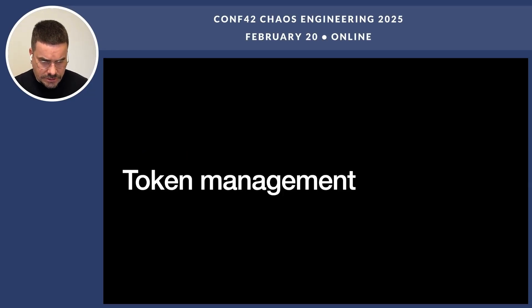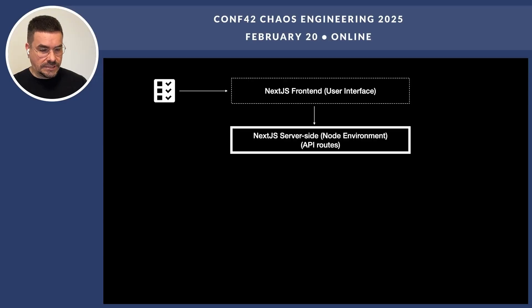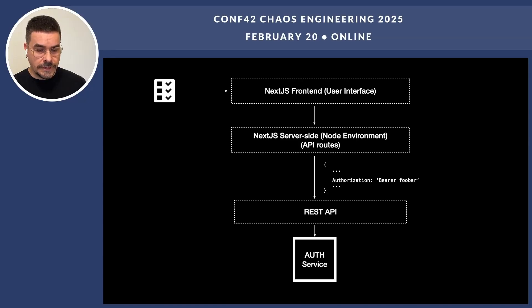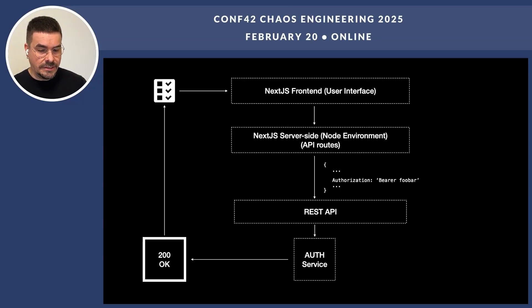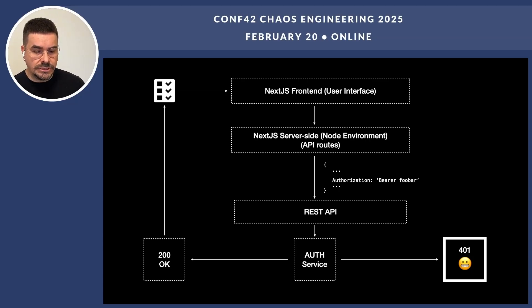Now let's talk about data flow in our application. For example, the user requests a list of tasks. The browser sends a request to the Next.js API route, and Next.js forwards the request to the backend with an access token in it. The backend validates the token and either replies with 200 OK and here is your data, or replies 401 Unauthorized and it's time to log in again. But what happens when the access token is about to expire?